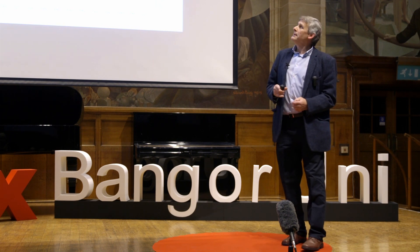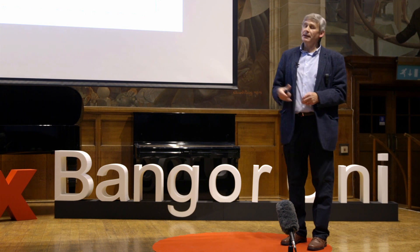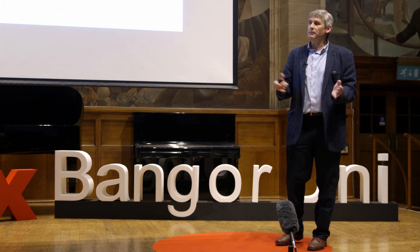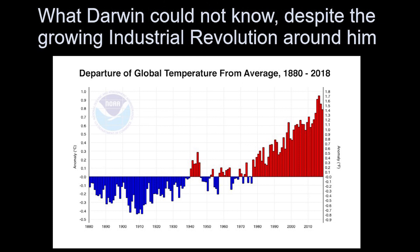What Darwin didn't know, and could not know, despite the growing industrial revolution around him, is that the climate was going to warm. What this graph shows is that in recent decades we've had warm years — warmer than average compared to years further back.